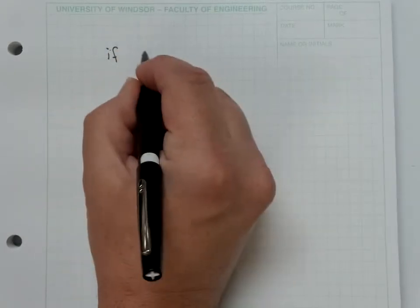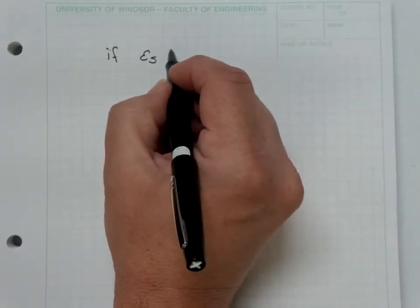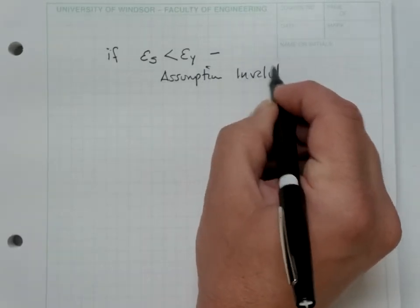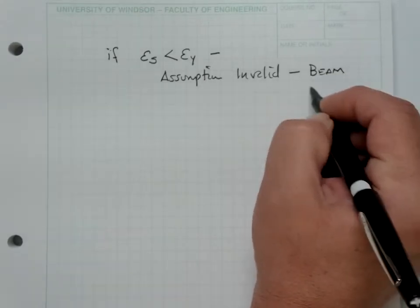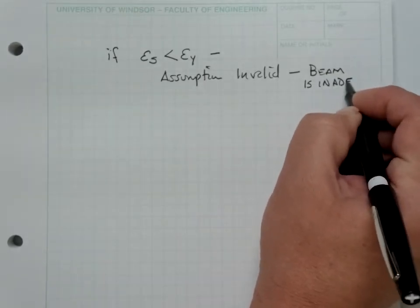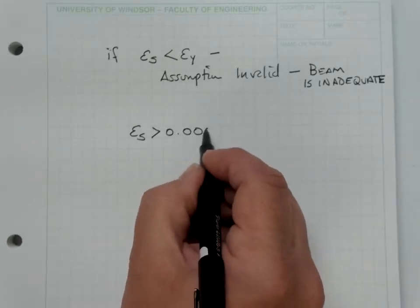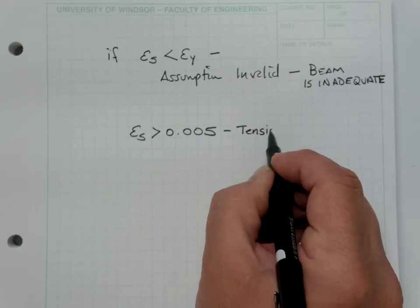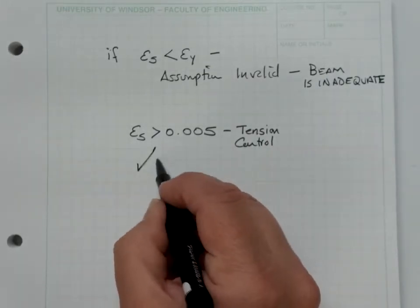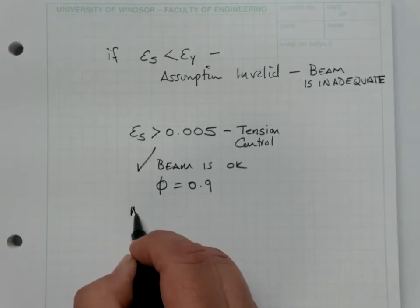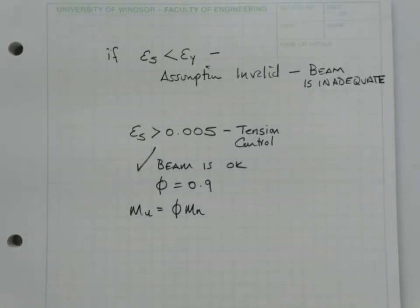If the strain in the steel is less than the yield strain, then the assumption is not true and the beam is inadequate. If the strain in the steel is greater than 0.005, then we are in tension control — the beam is good, phi equals 0.9, and the design moment is phi times M_n.